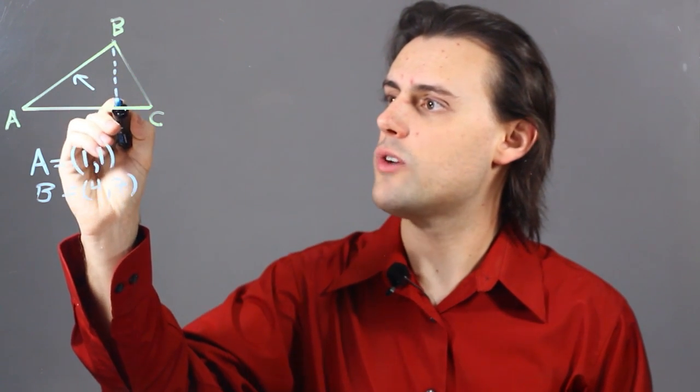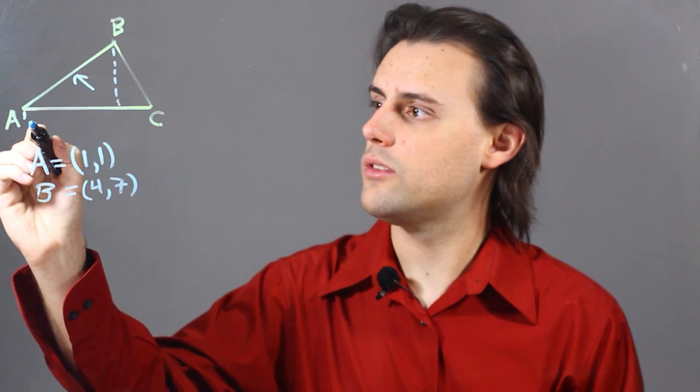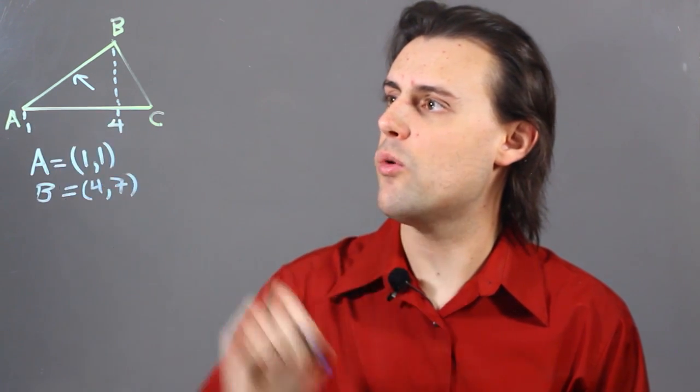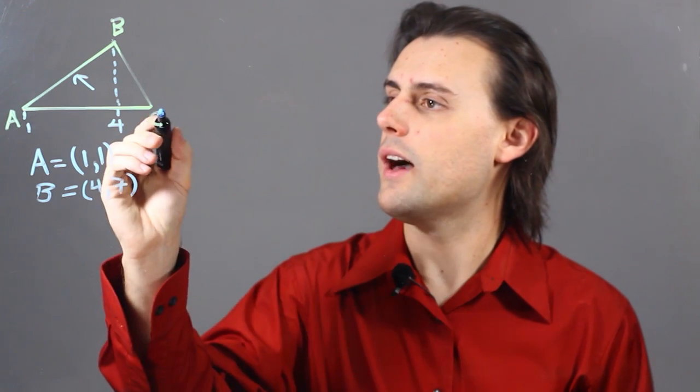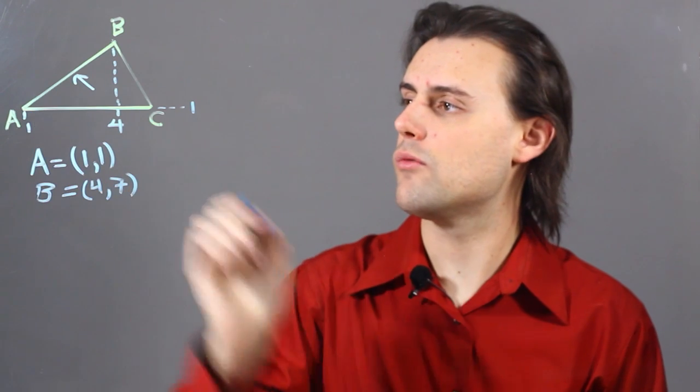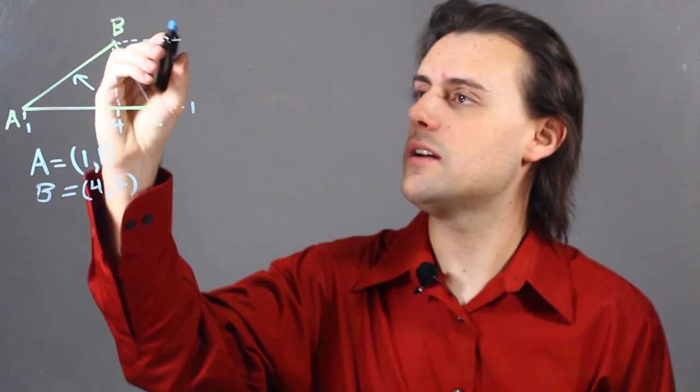So, this triangle, in x, this would be 1, and this point here would be 4, and the height would be 1, where AC is, and for point B I would have 7.